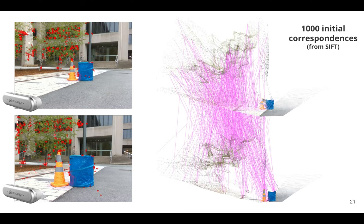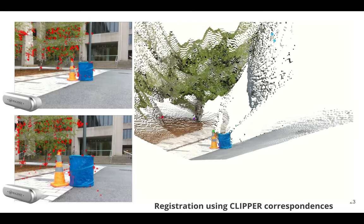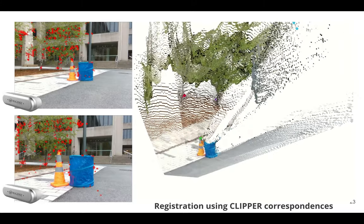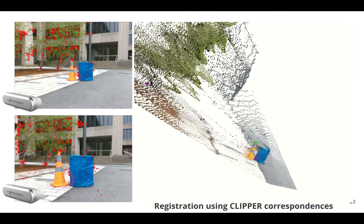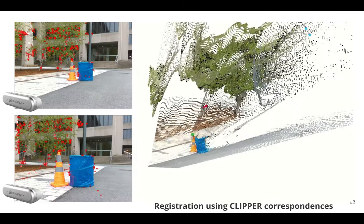So what we do is we take these raw point clouds, we generate 1000 initial correspondences between them, and then by applying Clipper, we select, in this case, we selected eight correspondences in about 100 milliseconds. And these correspondences then allow us to correctly register these two frames from two robots.